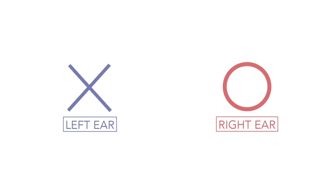The crosses and circles on the audiogram represent your ears. The cross represents your left ear, and the circle represents your right ear. They are both coloured to help you see where they fall on the audiogram more clearly, with your left ear being in blue, and your right ear being in red.